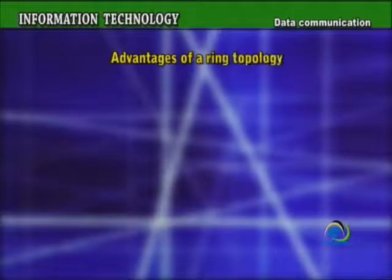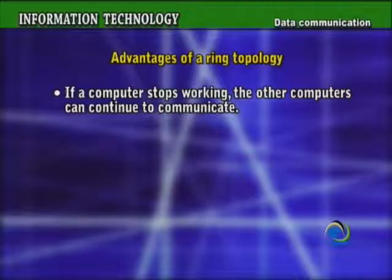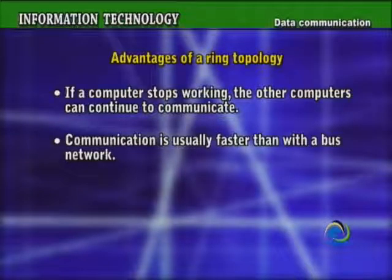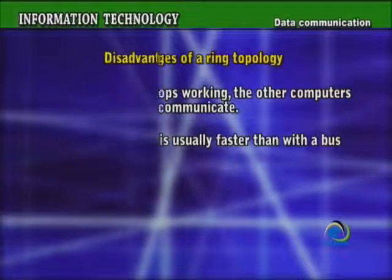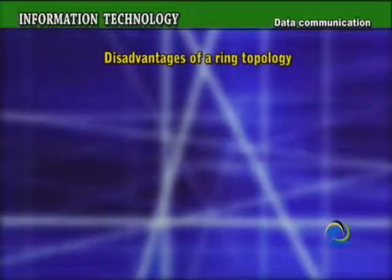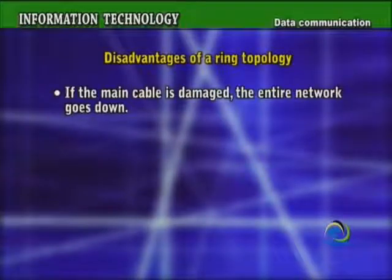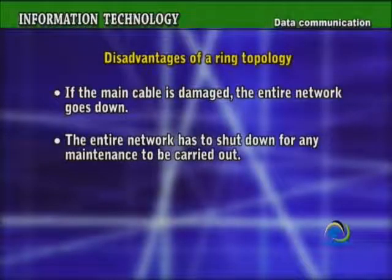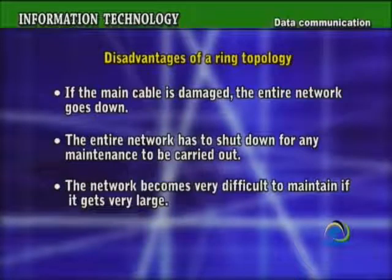Advantages of a ring topology: if a computer stops working, the other computers can continue to communicate, and communication is usually faster than with a bus network. Disadvantages: if the main cable is damaged, the entire network goes down; the entire network has to shut down for any maintenance to be carried out; and the network becomes very difficult to maintain if it gets very large.